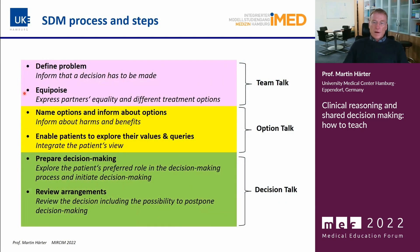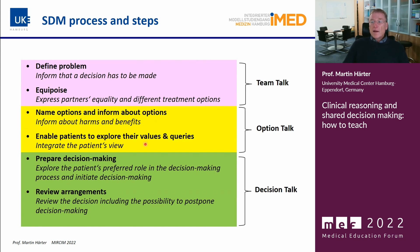We teach six steps. In the Team Talk, we define the problem and inform the patient a decision has to be made, express partners' equality, name the options, and inform about potential harms and benefits. Then in the Option Talk, we enable patients to explore their values and queries. In the Decision Talk, we prepare for decision making and review arrangements — including the possibility of postponing the decision if patients are not ready today.